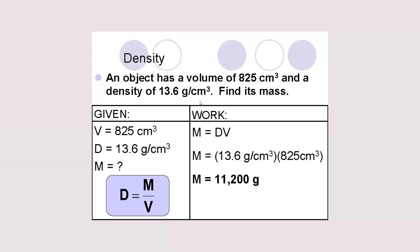Here we have an object with a volume of 825 cubic centimeters and a density of 13.6 grams per cubic centimeter. We need to find the mass of the solid. The given values are 825 cubic centimeters for volume and 13.6 grams per cubic centimeter for density. In this case, both numbers have three significant figures.